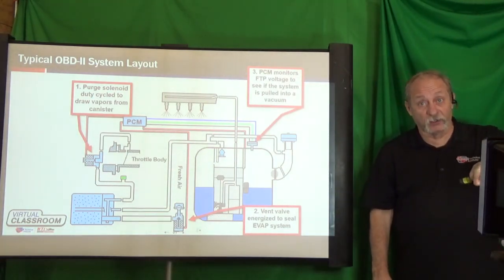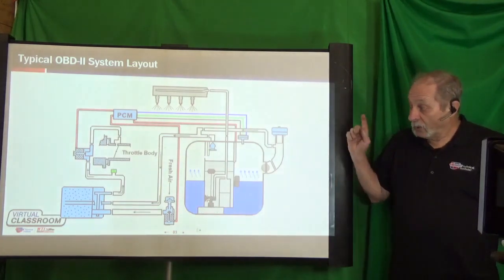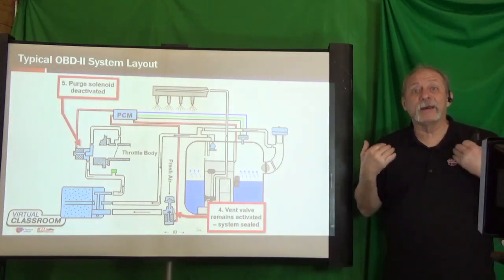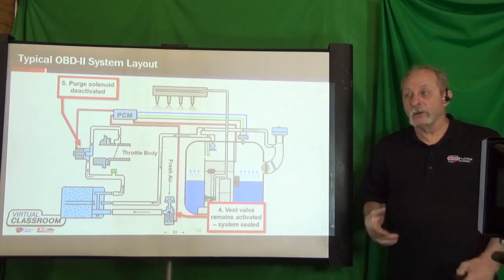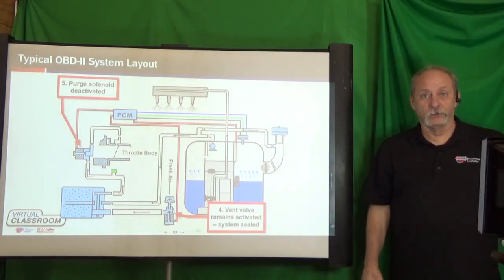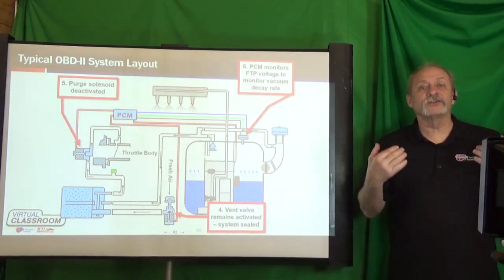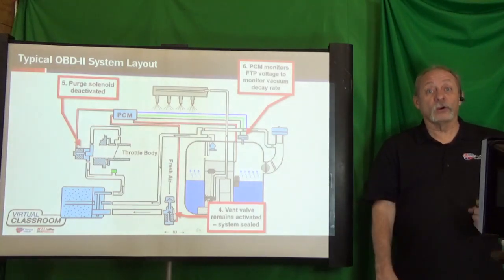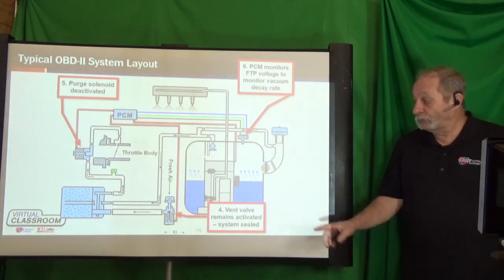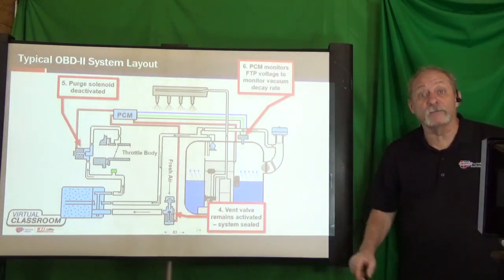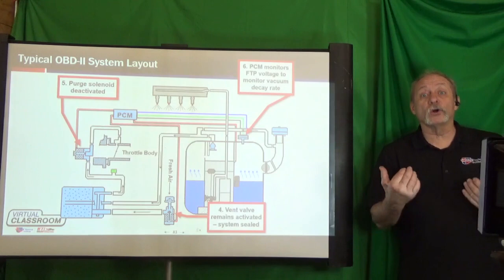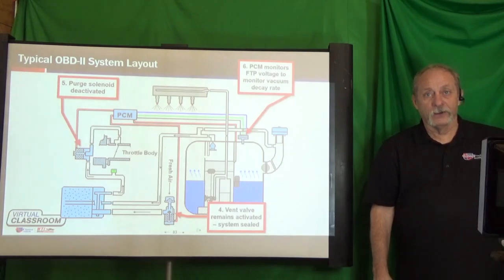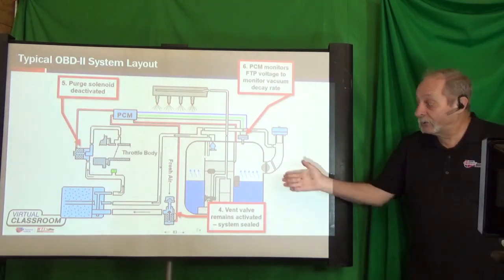Let's say it passes — we achieve 10 inches of water vacuum. The next thing the computer does is leave the vent valve on and turn off the canister purge valve, removing manifold vacuum. At this point, the canister and tank are sealed. The computer watches the fuel tank pressure sensor to see if vacuum degrades. Some vacuum decay is normal — we're allowed a 20 thousandths decay — and we also have fuel vapors coming off the fuel in the tank.